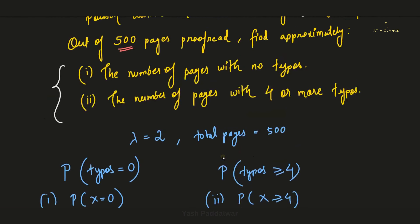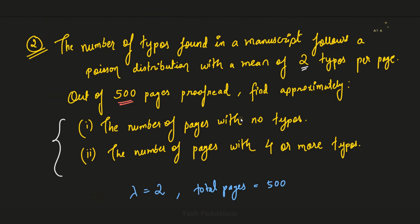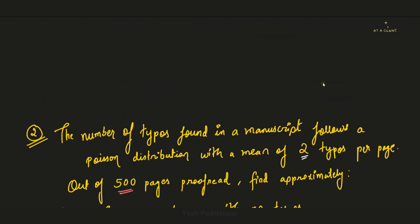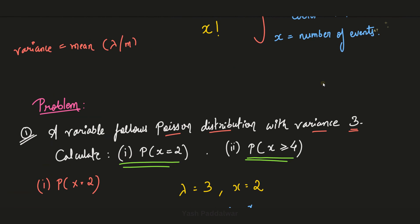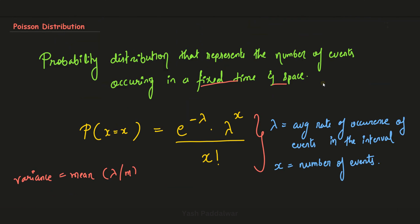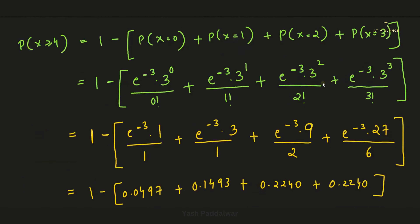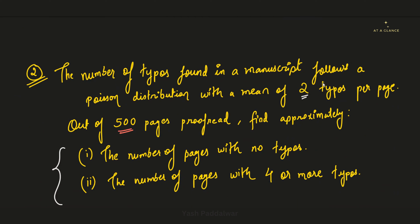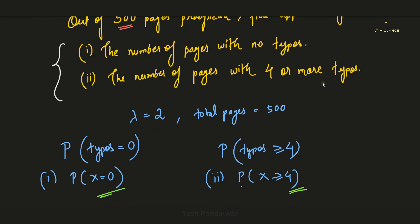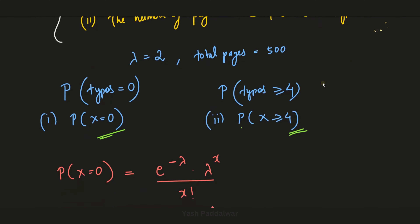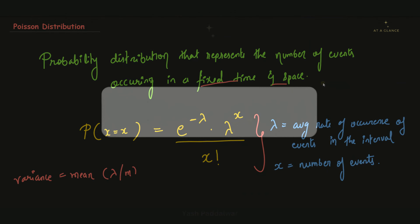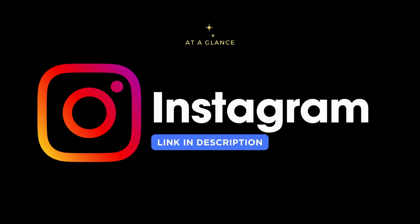So we got our final answer: 72 pages with 4 or more typos. I hope both these problems are clear to you all. If you have any doubts, put them in the comment section. For more such videos, please like, share, and subscribe to my channel, hit the bell icon, and follow me on Instagram and Telegram. Thanks for watching. Have a good day.